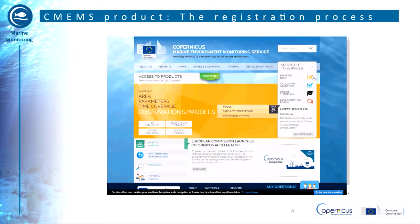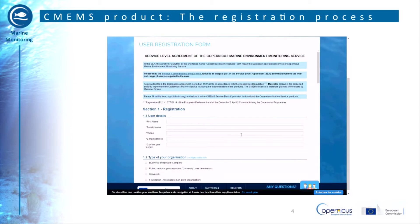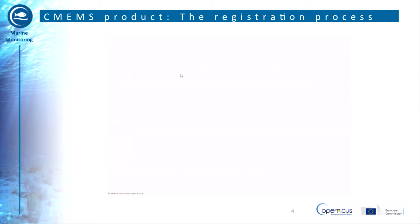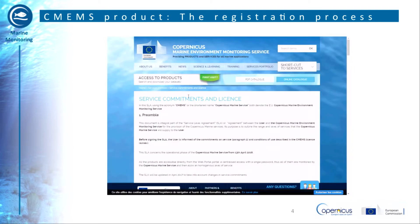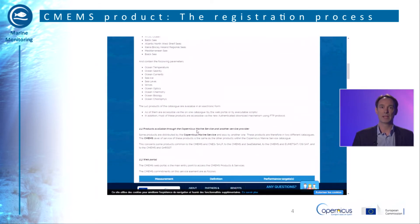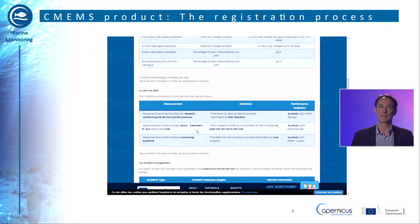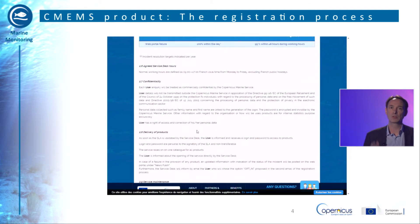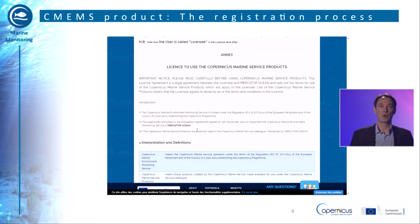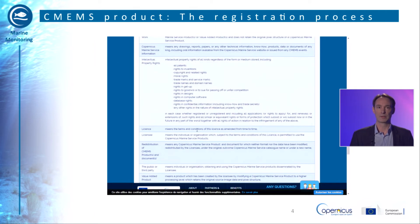Once on the CMEMS website, you just have to click on 'Register Now' on the right part to access the user registration form. First of all, click on the service commitment and license and read the corresponding document. It describes in detail how the service is made and the role of the service desk in supporting users. It also includes information about the name of the products and the geographical areas concerned.